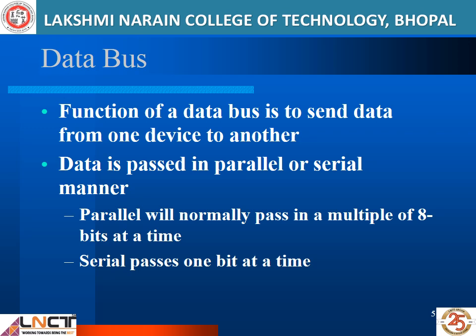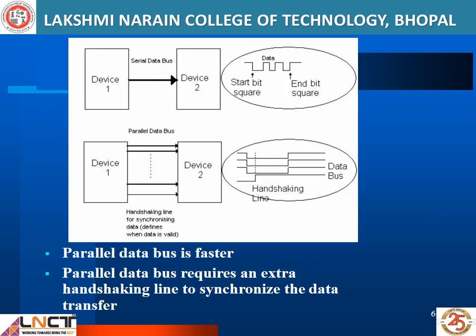Buses are classified depending upon how many bits they can move at the same time. We can classify the bus into 8-bit, 16-bit, 32-bit, or 64-bit. It is obvious that if the bus is a parallel bus, data can be transmitted faster because the parallel bus can transmit multiple bits in parallel — it may be 8-bit, 16-bit, 32-bit, or 64-bit.